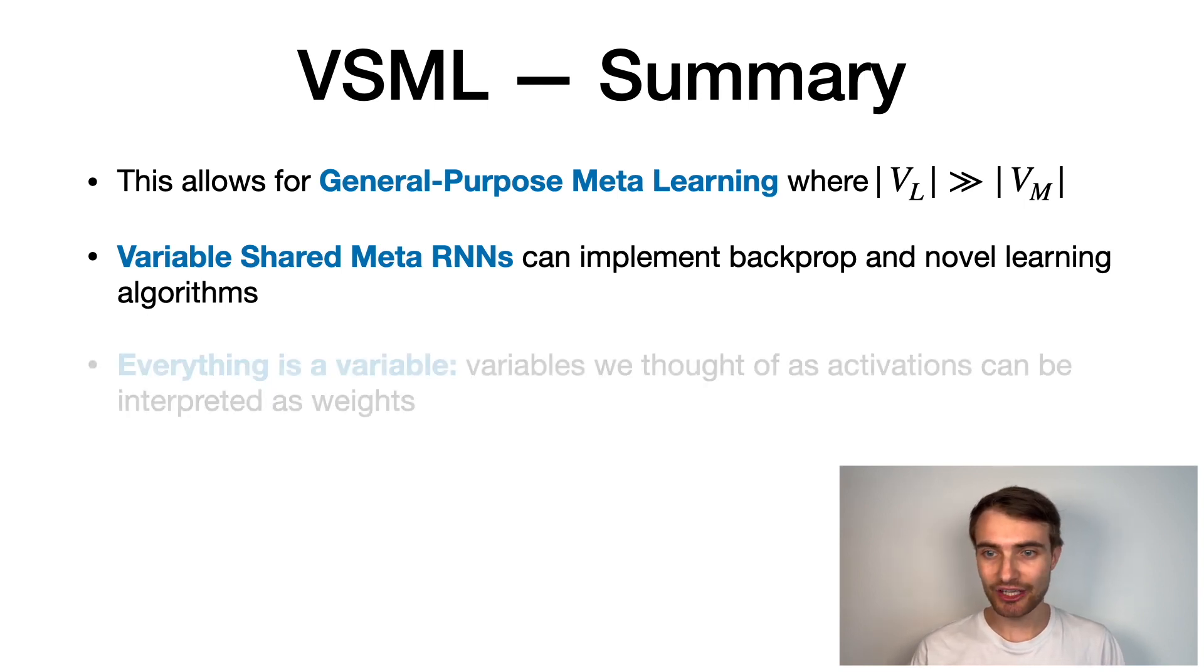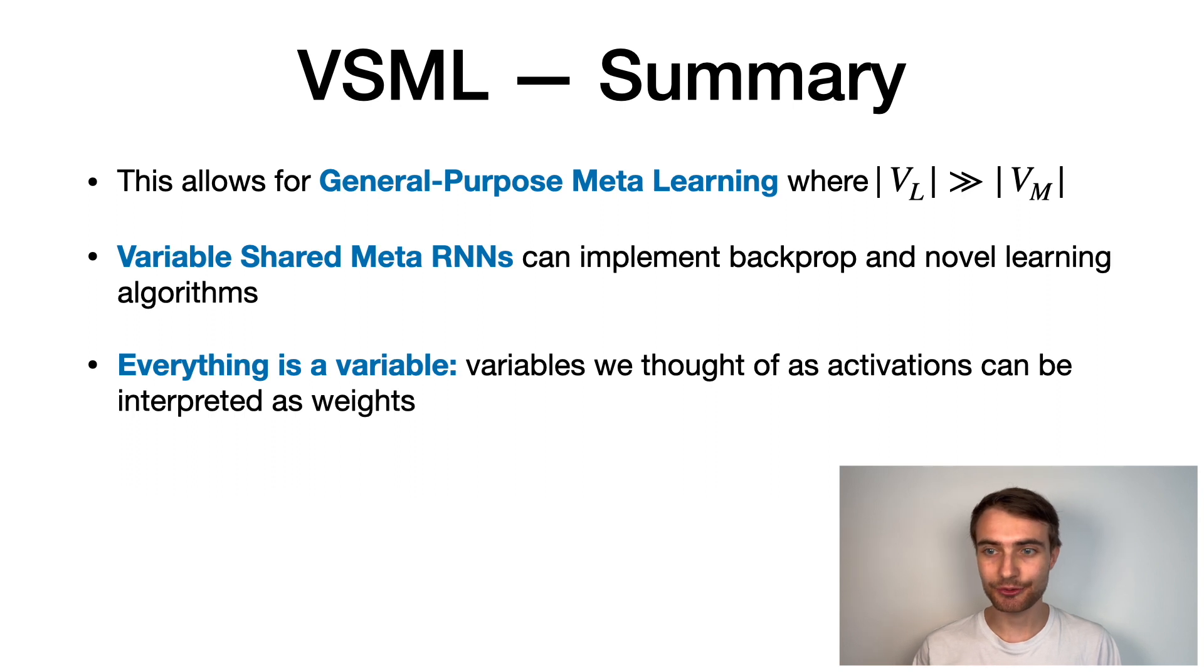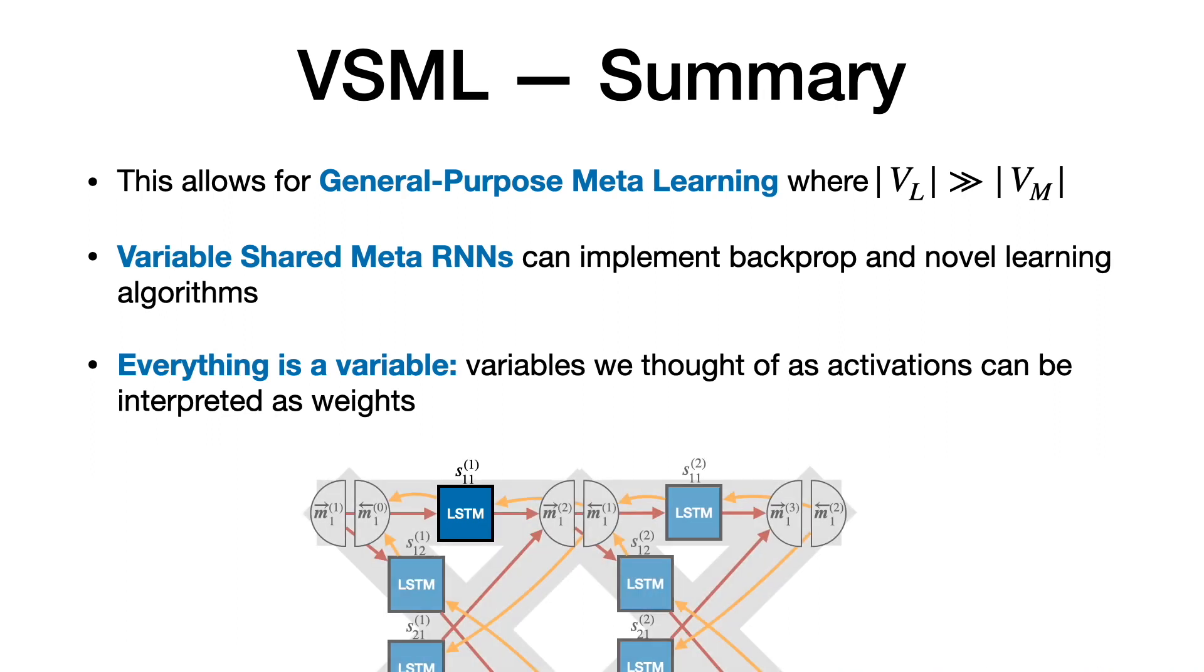Everything is a variable. There is no precise distinction between a weight and an activation. Variables we thought of as activations can be interpreted as the weights in an emergent neural network. The activations of this LSTM play the role of a weight if it passes messages to other LSTMs in a certain way. This makes variable sharing a general framework to express learning rules.